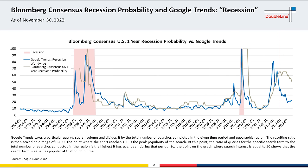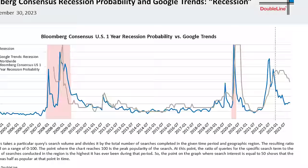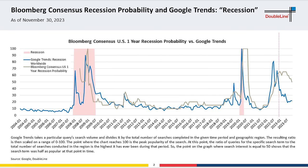Our first slide shows the expectation for recession coming into 2023. On screen is the Google Trends recession search trends against the Bloomberg consensus expectation for one-year recession. We've drawn a dotted line at the start of the year to highlight that as we came into 2023 there was a very high expectation for recession. Really, only during actual recessions did you see expectations get so large — and it was after recessions had already started. It was the most expected recession ever, and it was the most expected recession that didn't materialize.